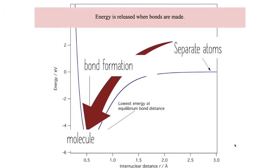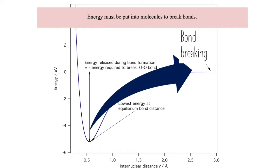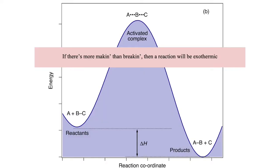Energy is released when bonds are made, but energy must be put into molecules to break bonds. If there's more making than breaking, then a reaction will be exothermic, and we can use the heat evolved to raise the temperature of what remains after reaction.